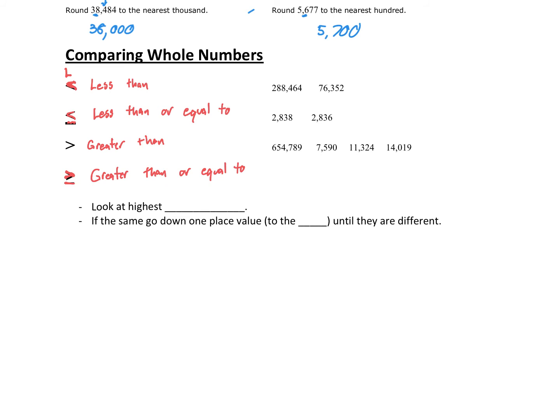So how do we compare whole numbers? We look at the highest place value. If they're different, that'll be your answer right there. We don't have to worry about any other place value. If they're the same, we go down one place value. So that means we're moving to the right, until they're different. It's that simple.